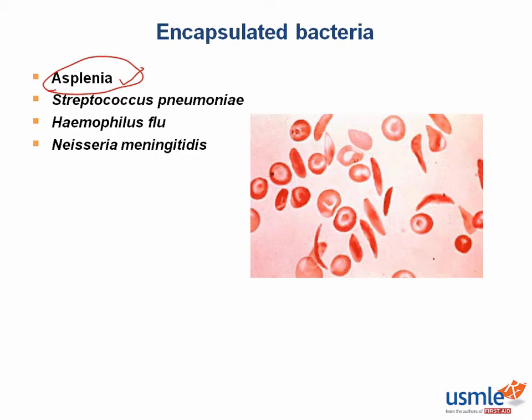On your test, you might get a vignette about a child with a classic history of sickle cell, and they'll tell you he gets Salmonella osteomyelitis. You think you've got the diagnosis figured out, but then they ask what other vaccines the kid should get. You better make sure that kid gets vaccinated against meningitis, H-flu, and Strep pneumo.